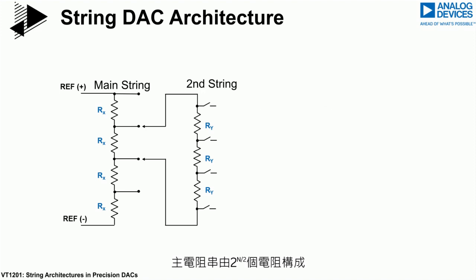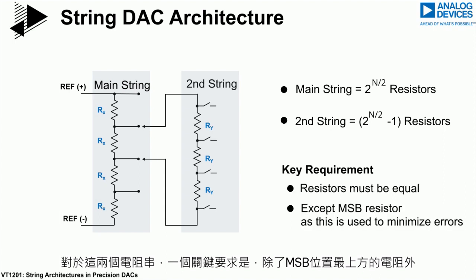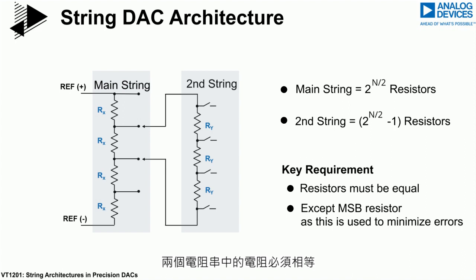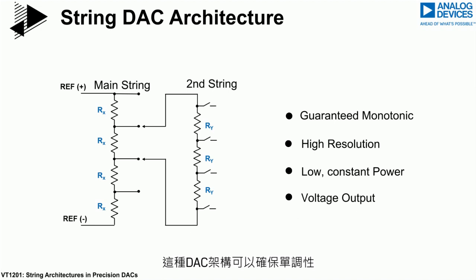The main string consists of 2-to-the-N-over-2 resistors and the second string consists of 2-to-the-N-over-2 minus one resistors. A key requirement is that the resistors in the two strings must be equal, apart from the top resistor in the MSB position, which is used to reduce gain error effects. This DAC architecture ensures guaranteed monotonic, high resolution, low constant power, voltage output DACs.